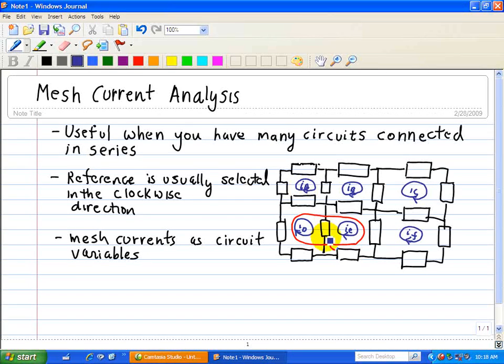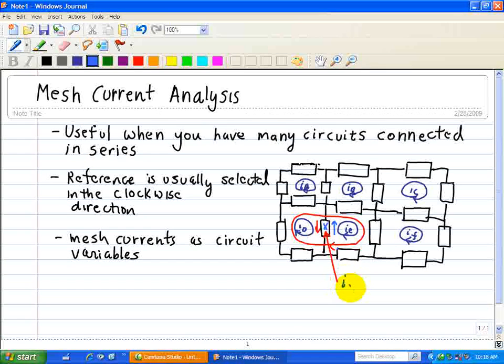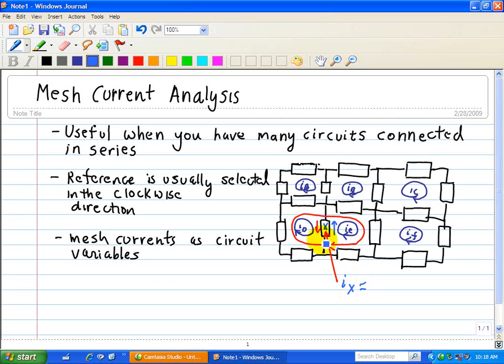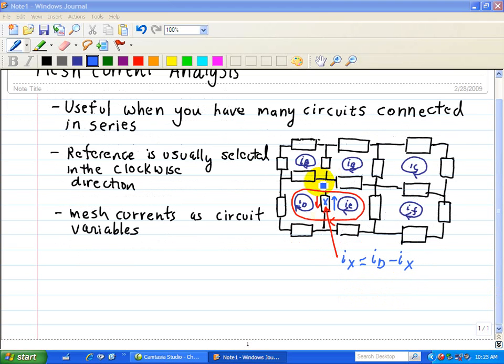Let's take this element here. Here's our reference direction. For ID, we see it going this way, and for IE, we see it going that way. Therefore, the current through this element, we'll call it X. The current through element X is basically ID minus IE. Here we note that reference direction for IX agrees with the direction of ID.